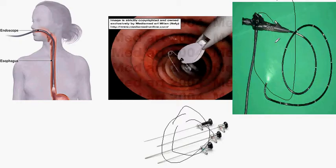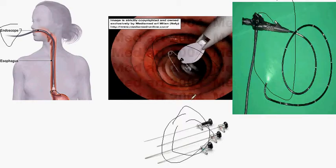Endoscopy helps to diagnose and treat some conditions of the esophagus — for example, detecting Barrett's esophagus, taking biopsy and cytology samples to detect cancer, dilating strictures, and removing foreign bodies. When the esophagus is routinely checked, the gastroesophageal junction and the stomach are also examined.